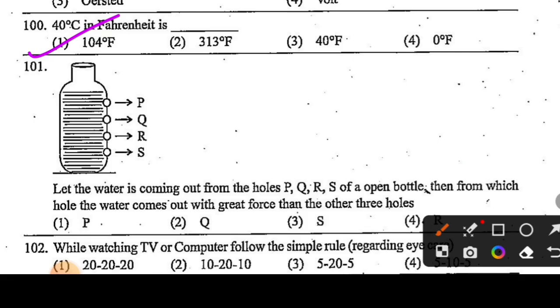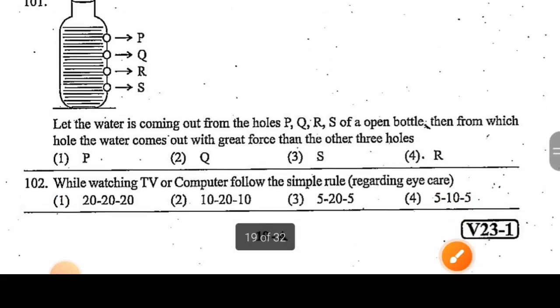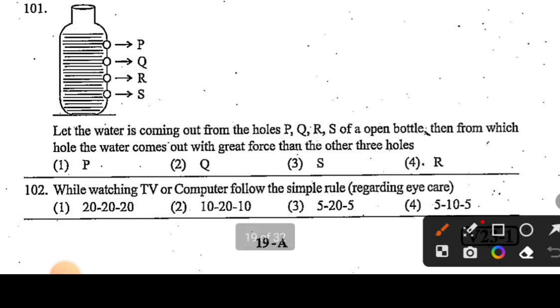Question 101: this is a pressure problem. This figure is there in your book as well. Water is coming out of holes P, Q, R, S of an open bottle. From which hole does the water come out with greatest force? See children, the hole which will be at the bottom will face greater pressure compared to which is at the top. The answer is option number 3. S will experience the highest pressure. Just remember this picture: P will experience the least pressure, S will experience the highest pressure.